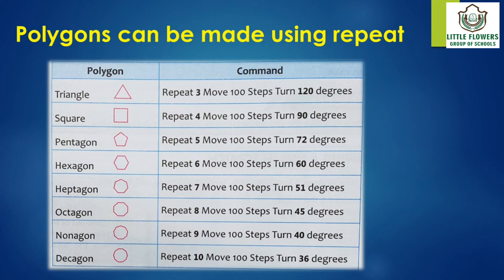The thumb rules are: you must know the number of sides in the shape; each time a repeat command is used, you draw a line and turn at a corner; you must know the degree of the angle at the corner. It is very easy to calculate — just divide 360 by the number of sides. For example, to draw a triangle, the turn will be 360 divided by 3, which equals 120 degrees.